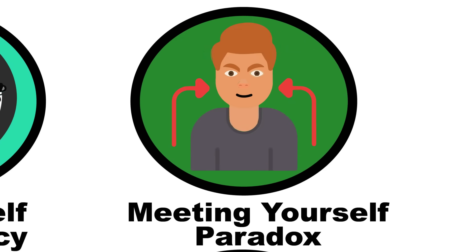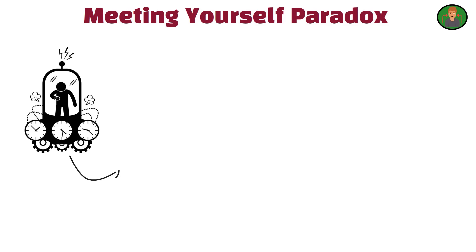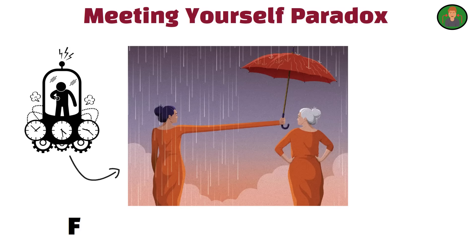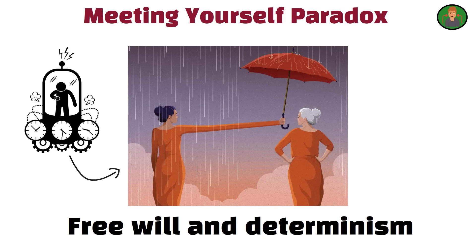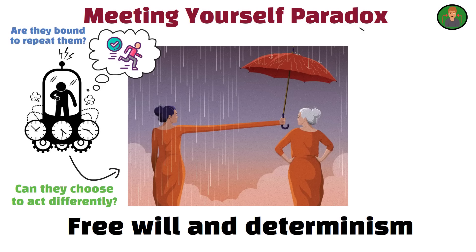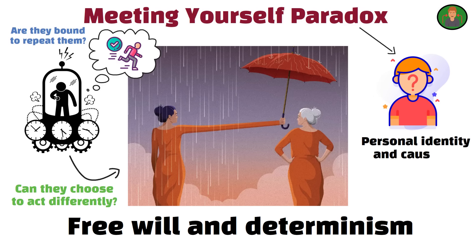The meeting yourself paradox occurs when a time traveler encounters a past or future version of themselves. This situation raises questions about free will and determinism. If the time traveler knows their future self's actions, are they bound to repeat them? Can they choose to act differently? This paradox explores the nature of personal identity and causality in time travel scenarios.